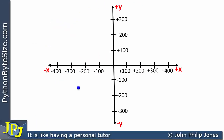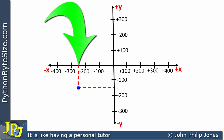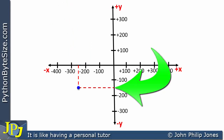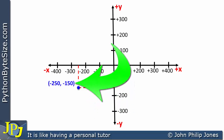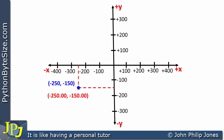Let's now consider another dot. We go up with the dotted line to the x-axis and across to the y-axis. On the x-axis, it falls between minus 200 and minus 300, which is minus 250. On the y-axis, it's between minus 100 and minus 200, which is minus 150. So the coordinate position is (-250, -150), where minus 250 is x and minus 150 is y. In Python, that would include positions for decimal fractions.